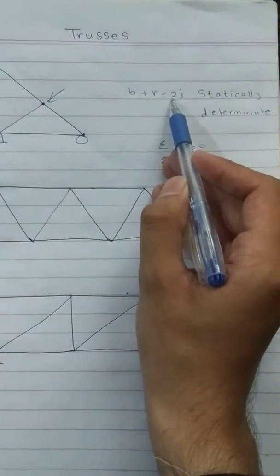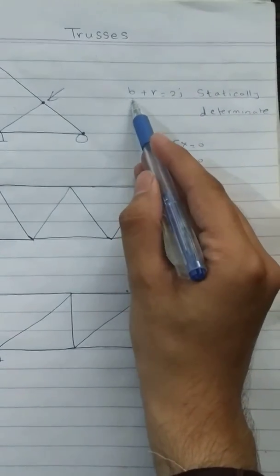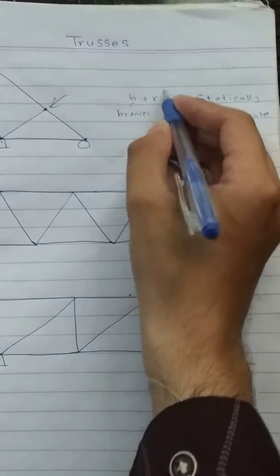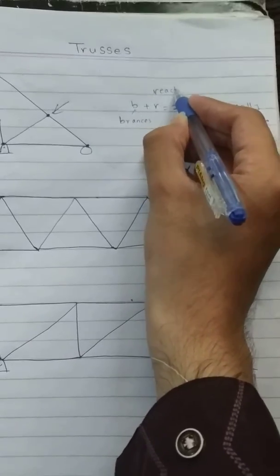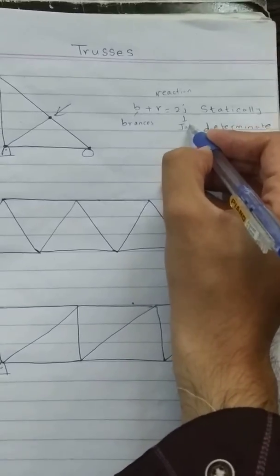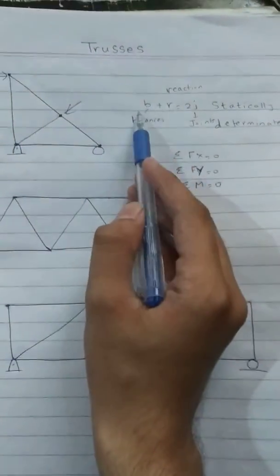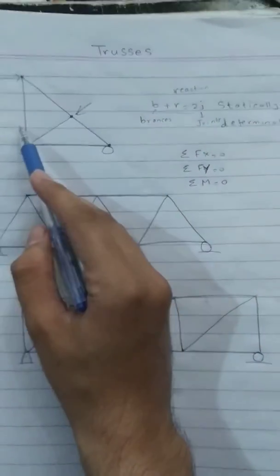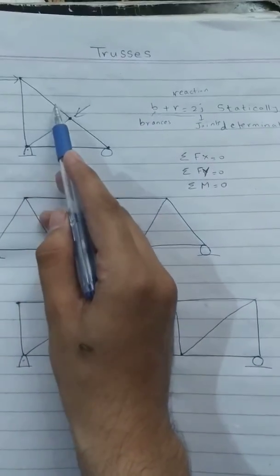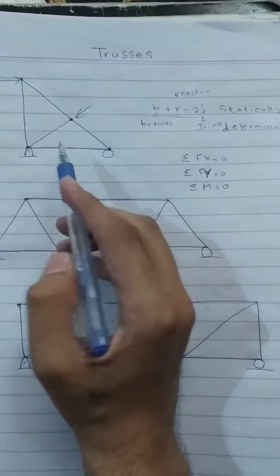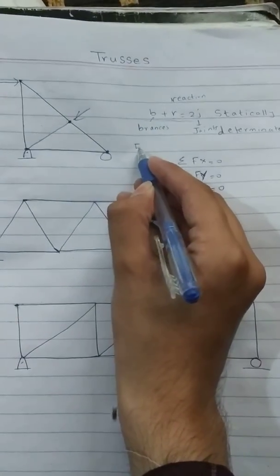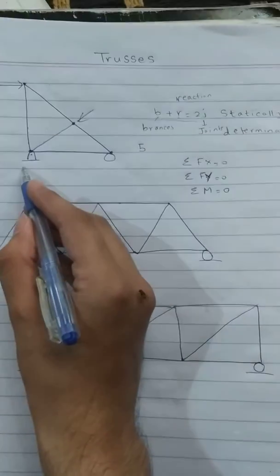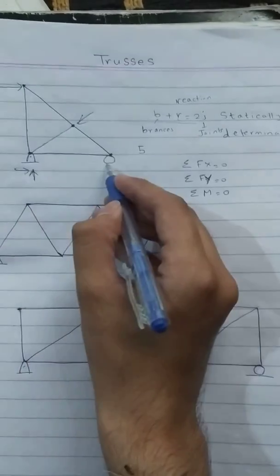What are these three things inside this equation? b is basically the number of branches, r is reactions, and j is joints. Now we will check whether this equation applies to this truss or not. We will first count the branches: one, two, three, four, five. So we have five branches.